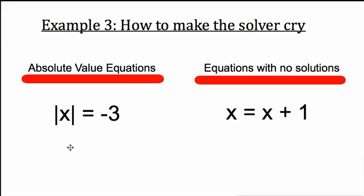Alright, here's two more examples. Absolute value equations. You could get a no solution here. There is no number you can put in for X where it would take the absolute value of it and be negative 3. And also, this equation with no solutions, X equals X plus 1. I know it might look reasonable at first glance, but there's no solution to this one either. Let's see how the calculator handles this.